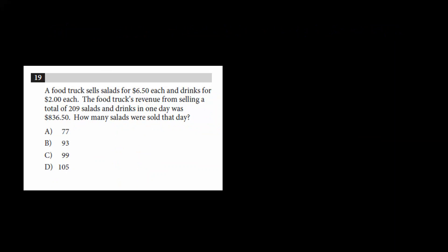The first thing we want to do is define our variables. The question asks for the number of salads sold that day, so that must be one of our variables. We can call it S. The food truck also sells drinks, so let's set D equal to the number of drinks sold that day.